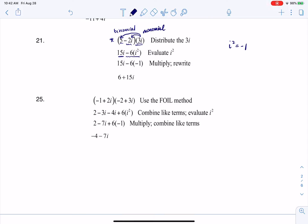Then I have basically 15i plus 6 and we tend to write the real number part first and then the imaginary component second, so you can write your answer as either 15i plus 6 or 6 plus 15i.